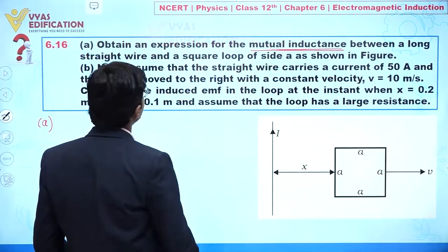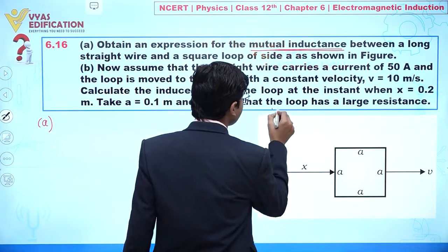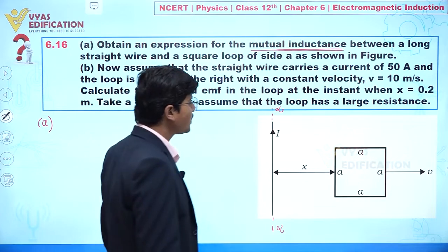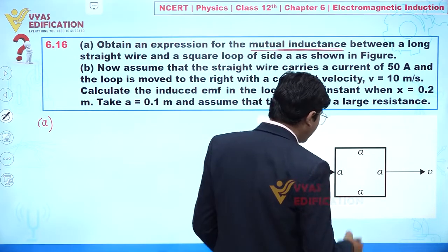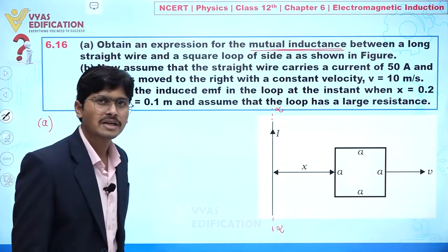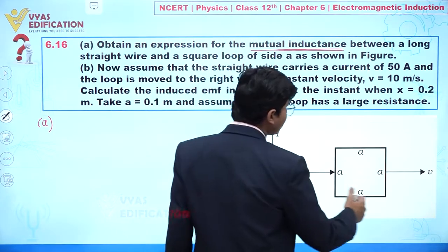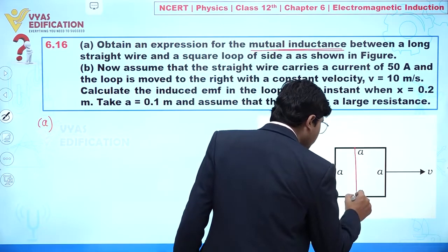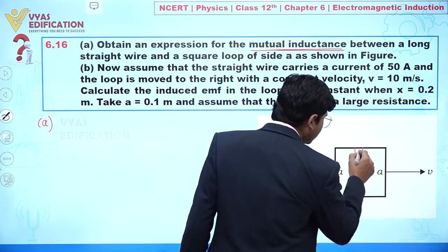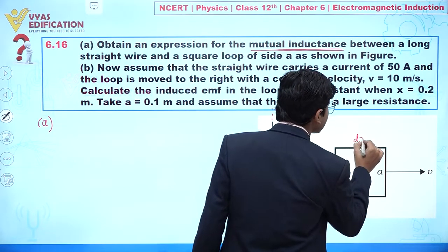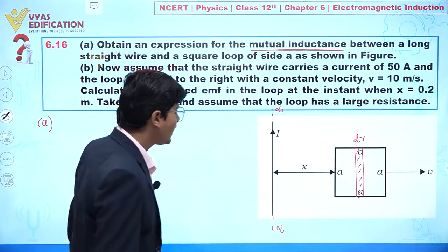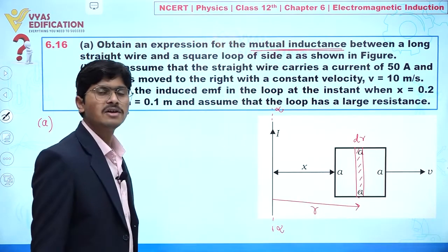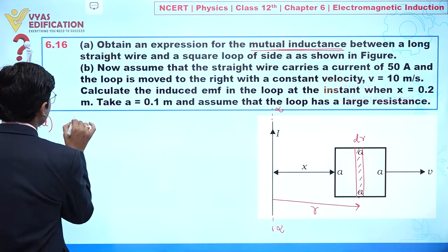Since we have a long straight wire — extending to infinity at both ends — different elements of the square loop are at different distances from this wire. That's why we take a very small strip of thickness dr situated at a distance r from the long wire.